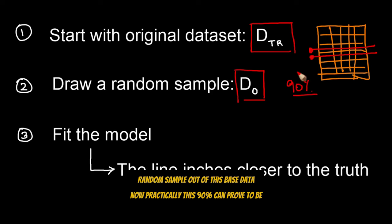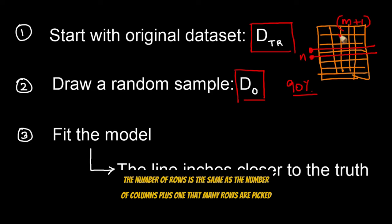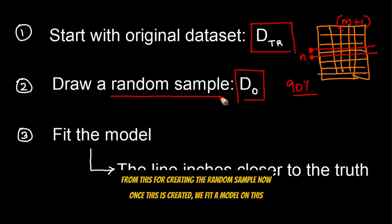Now, practically this 90% can prove to be a large number. So by default in scikit-learn, when you have a data set and this data set contains m columns and n rows, by default it will pick m plus one rows. The number of rows is the same as the number of columns plus one.